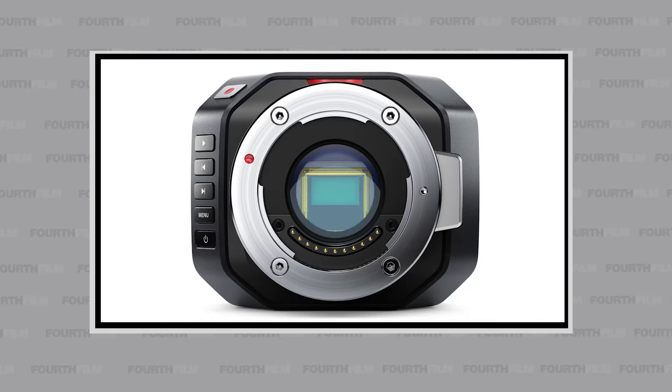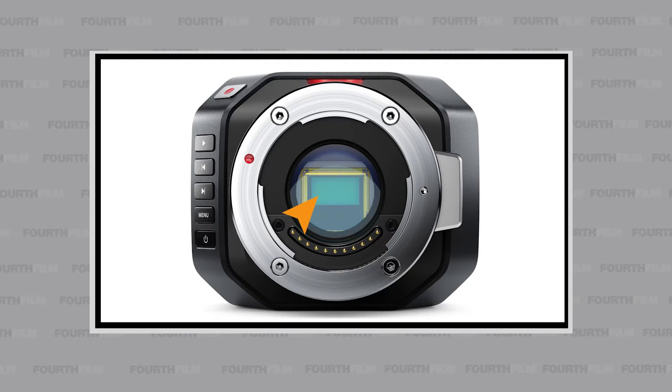The body consists of the shutter, also known as the gate. The sensor is what light falls on to create great images. As much as other parts play a role in creating images, let's just get acquainted with this tool for now.